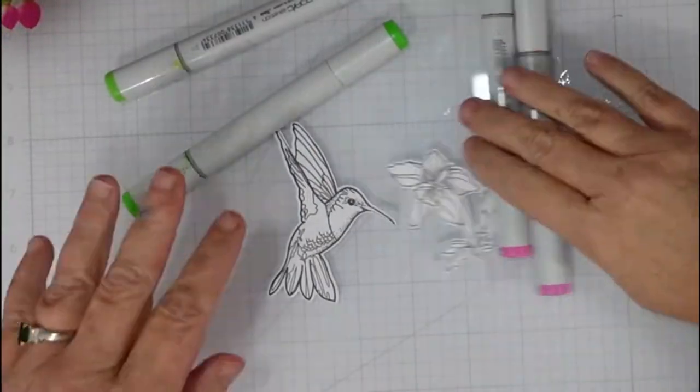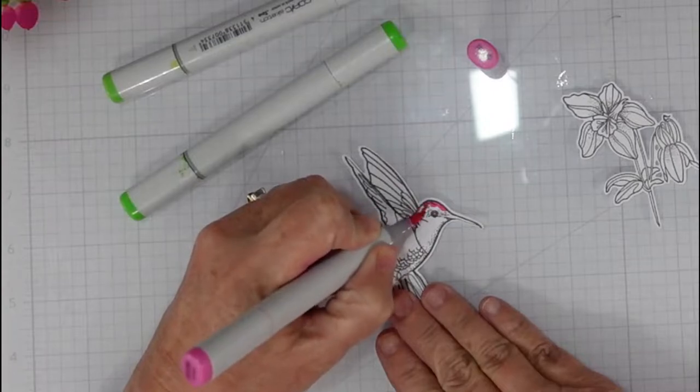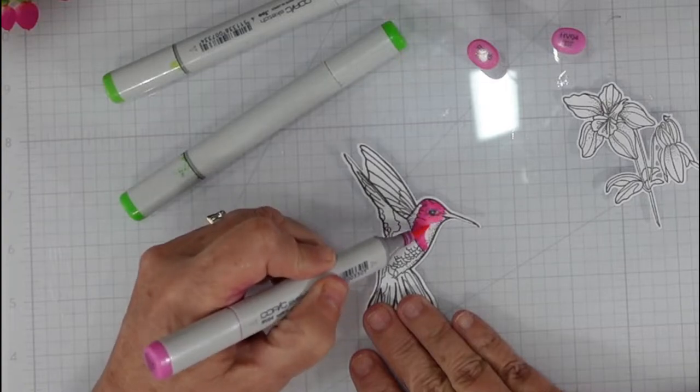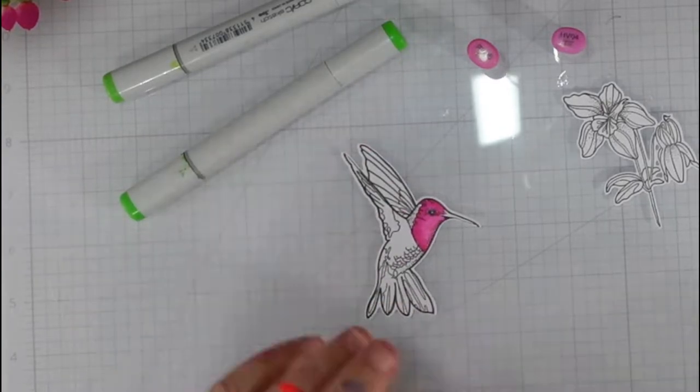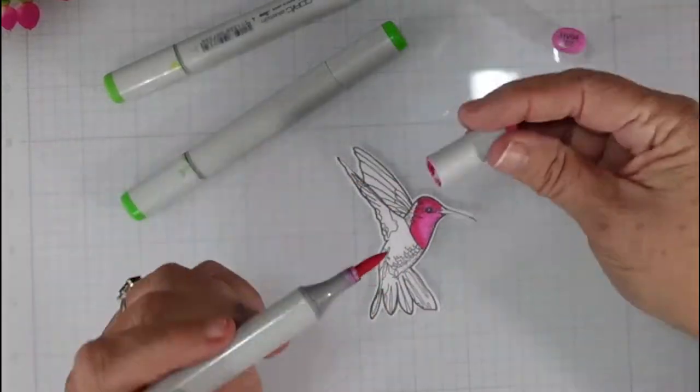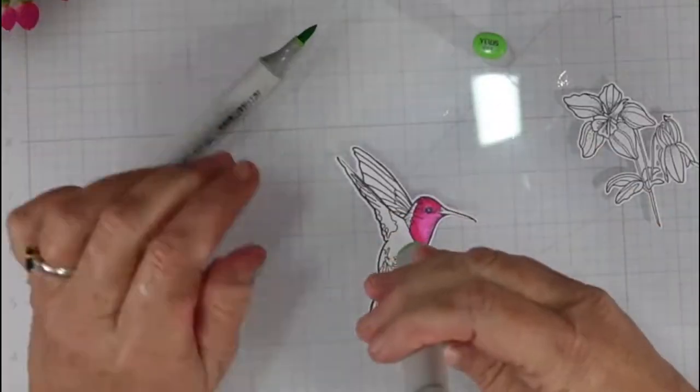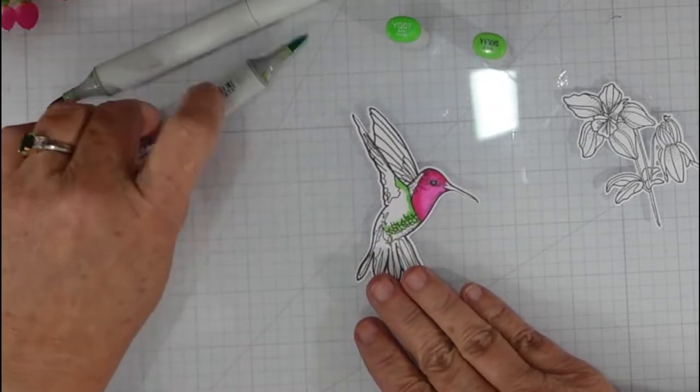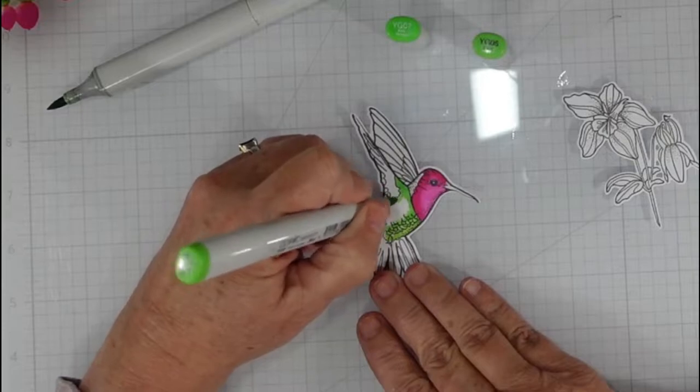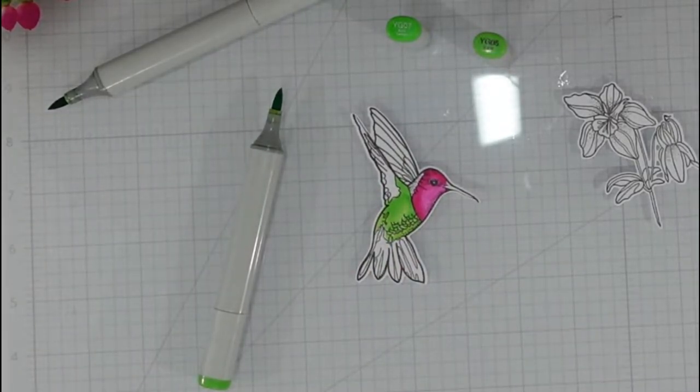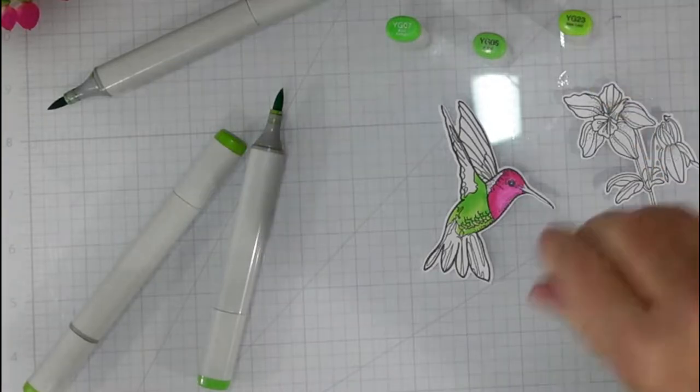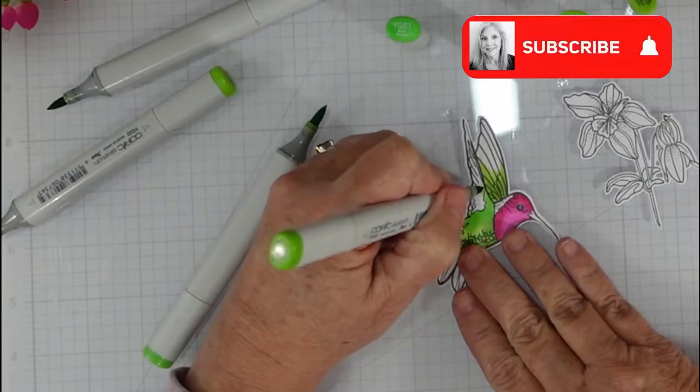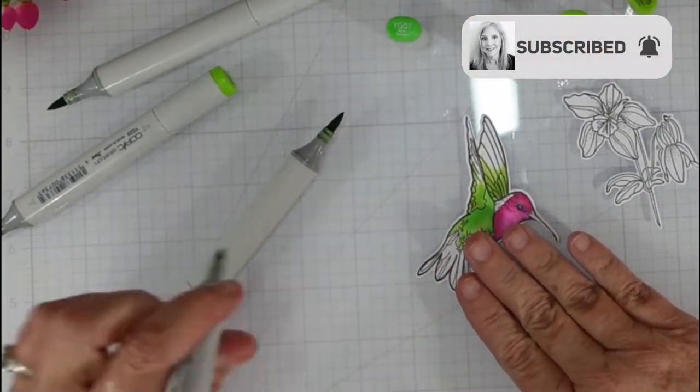We're going to start by coloring up our hummingbird. I did some fairly simple coloring on this. I started with some pinks and so I went with an R6 which was my darkest color on the left side of his head, and I blended that out with an R4. A hummingbird, well there's several different colors for hummingbirds. I happen to have black hummingbirds with purple necks here, but I really like the pink and green so I went with this style of hummingbirds.